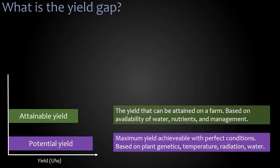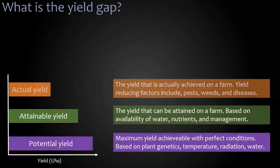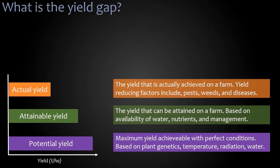Because of various constraints, many farmers never reach that attainable yield. What we have left is the actual yield, which is much smaller than the attainable and smaller again than the potential. This is what we typically achieve on a farm, and the reason it's much less is because of factors like pests, weeds, and diseases which reduce the yield.